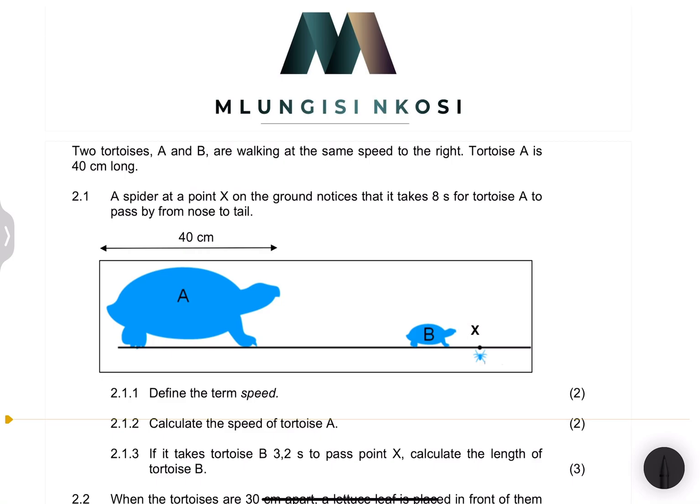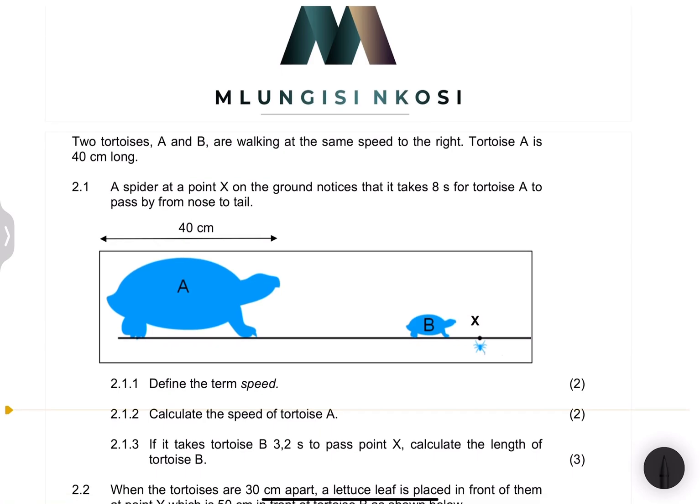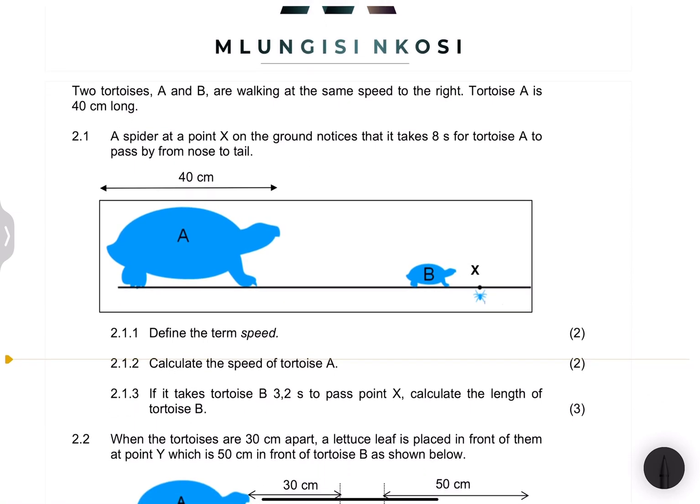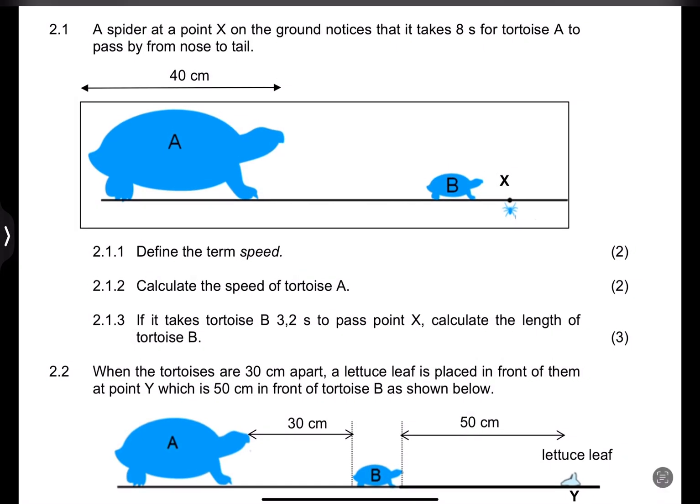I took this question from the 2019 supplementary exam and it has to do with tortoises. We've got two tortoises, A and B, that are walking at the same speed to the right. Tortoise A is 40 centimeters long. A spider at point X on the ground notices that it takes 8 seconds for tortoise A to pass from nose to tail. There's our tortoise A in this case.